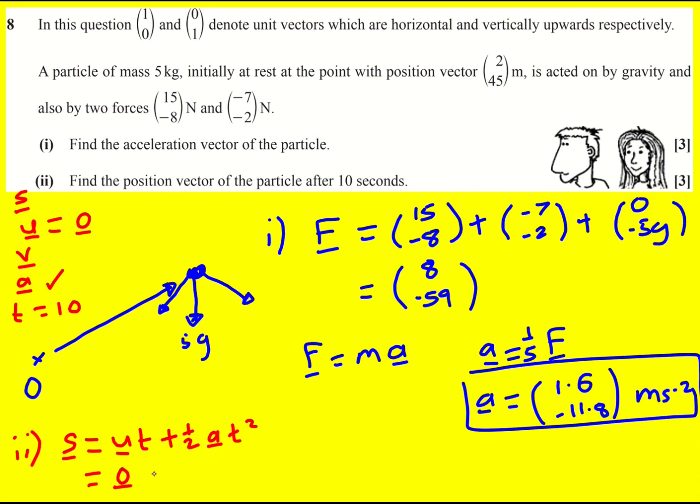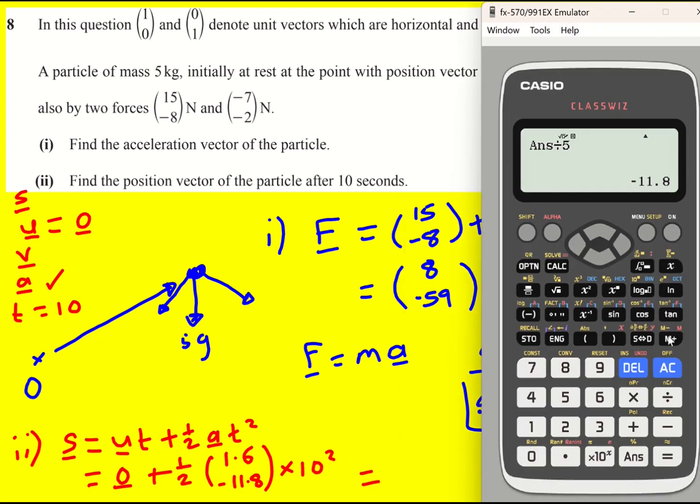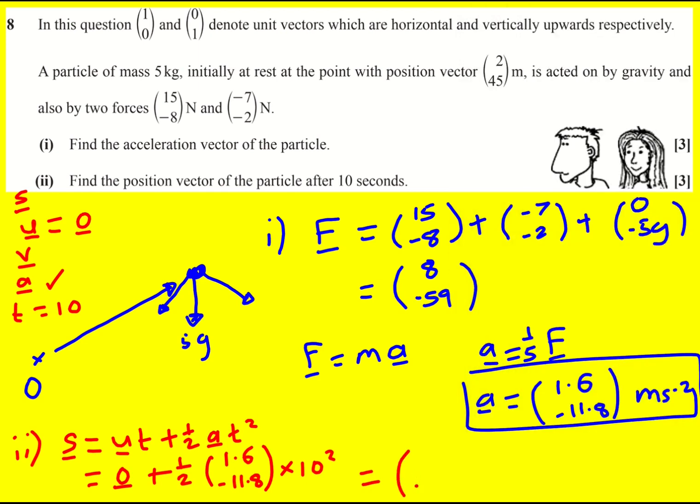So this one's going to be just a zero vector, and it's going to be a half times (1.6, -11.8) times 10 squared, which is just going to mean that I can take my vector and times by 50, because 10 squared is 100, 100 divided by 2 is 50. So times this one by 50 gives -590, and times 1.6 by 50, if I times by 100 I get 160, divided by 2 I'm going to get 80.